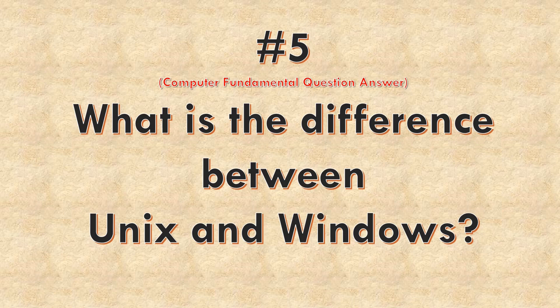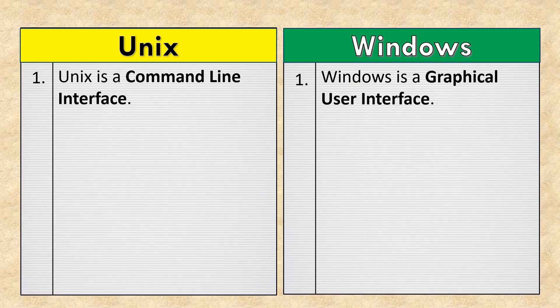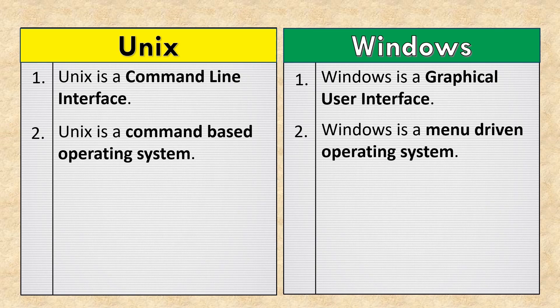What is the difference between Unix and Windows? Unix is a command-line interface, while Windows is a graphical user interface. Unix is a command-based operating system, whereas Windows is a menu-driven operating system.